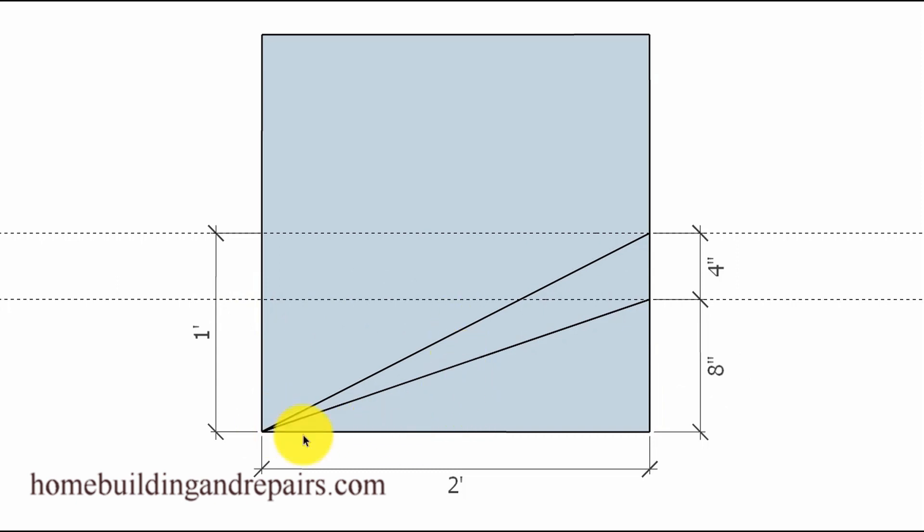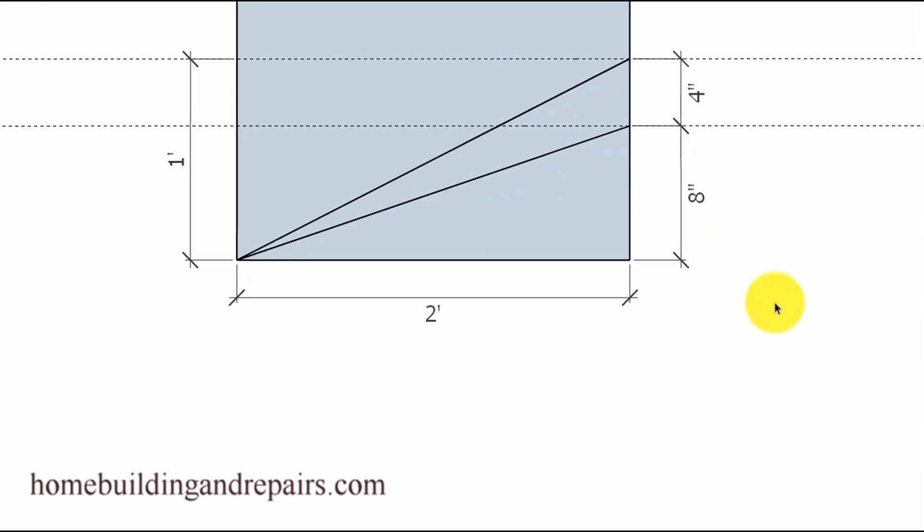And the same for our 6 and 12. If we come in a foot, we're going to go up 6 inches. We come in 2 feet, we're going to go up 12 inches. So not too difficult. We're going to figure out the amount of vertical rise for each, the 6 and the 4 and 12, and then simply subtract the difference to get our number.